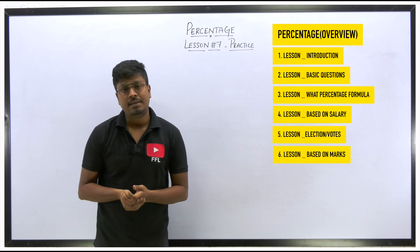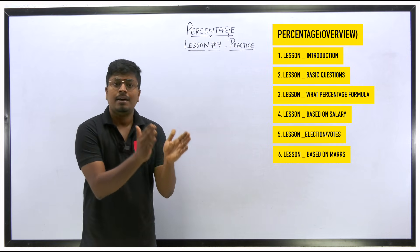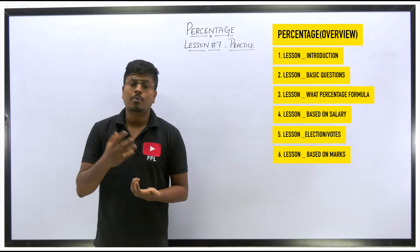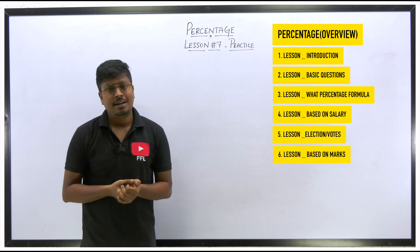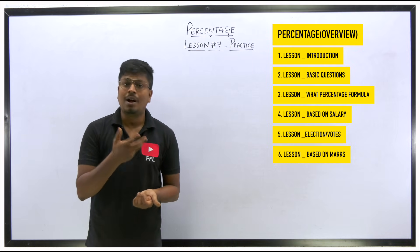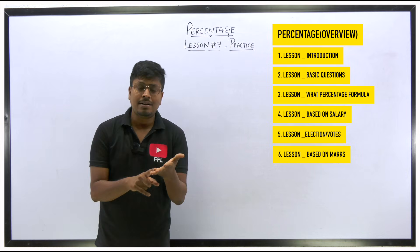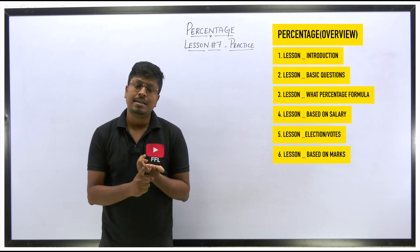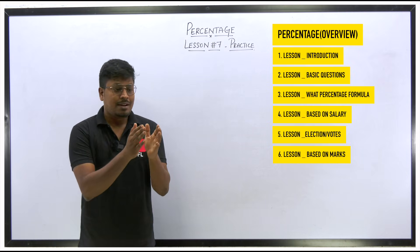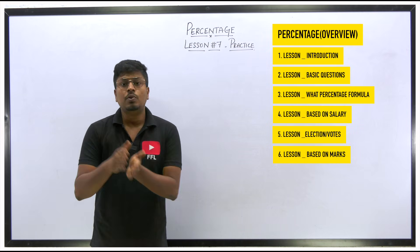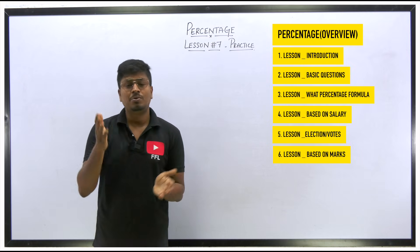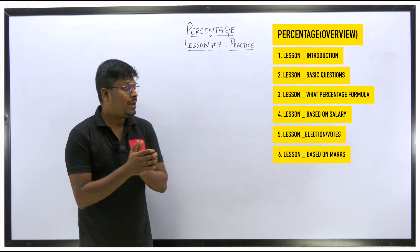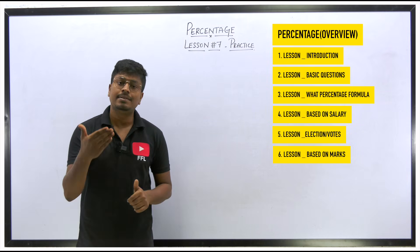Lesson four was salary-based: given a salary with expenses like food at 10% and transport at 20%, what are the savings or total expenditure? Lesson five was based on elections — a very important concept found in bank exam prelims, CAT, GATE, and UPSC exams. For example: the winner got 68% and the loser got 20%, with a majority of 1200 votes — find the total votes won by the winner.